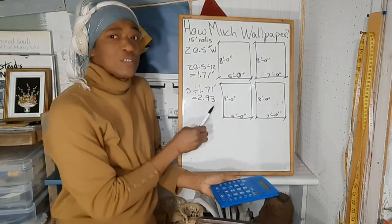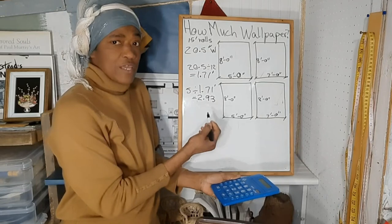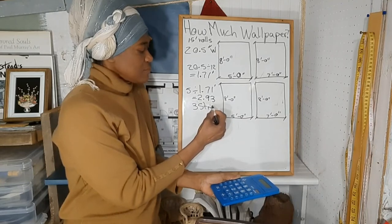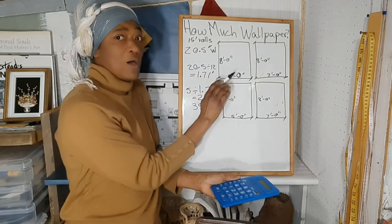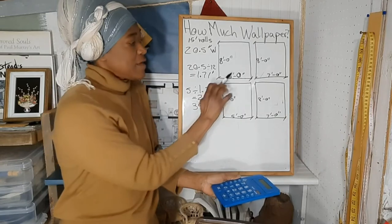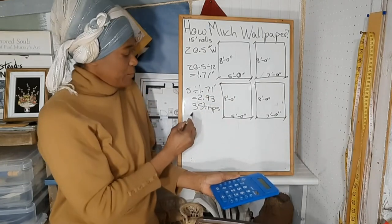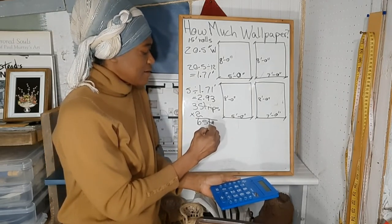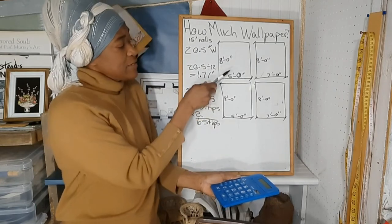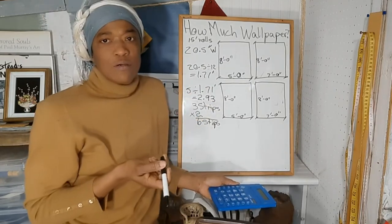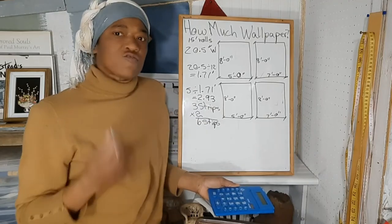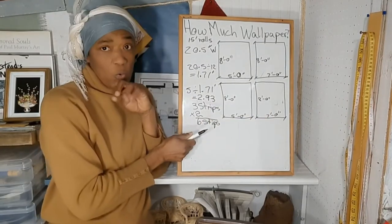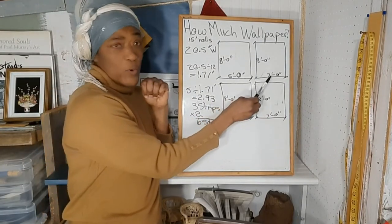We will round up the 2.93 to 3, so we need 3 strips to go across the one wall. However, we have two walls that are 5 feet wide, so we will multiply the 3 by 2 and we'll get 6 strips. So we will need 6 strips or widths—if you hear me say strips, it's the same as widths.